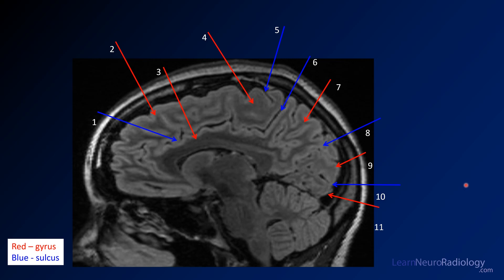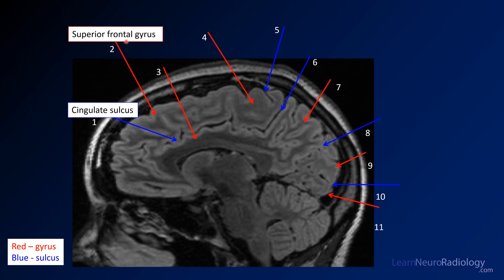Finally, I'm going to show you a midline image and we'll go through some of these structures. The blue are sulci and the red are gyri. Number one here is the cingulate sulcus. The gyrus adjacent to the midline in this part of the frontal lobe — number two — is the superior frontal gyrus, seen just a little bit off the midline. This arrow is referring to the gyrus just above the corpus callosum; if this is the cingulate sulcus, then that's going to be the cingulate gyrus.